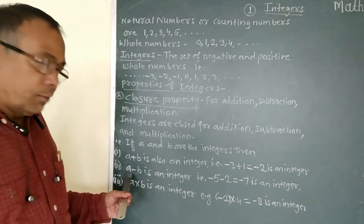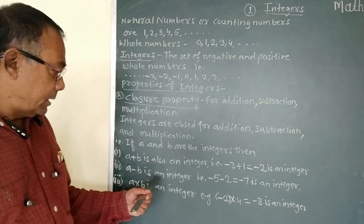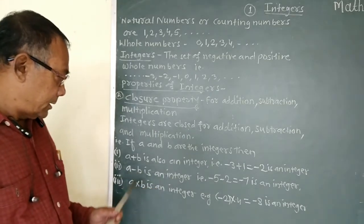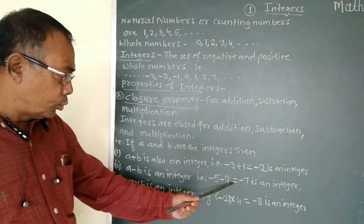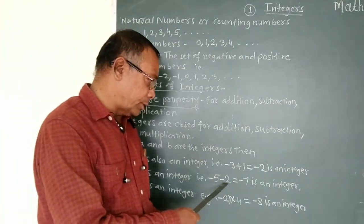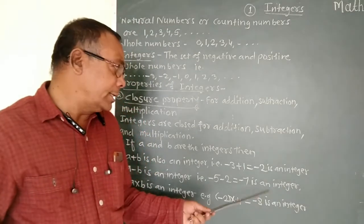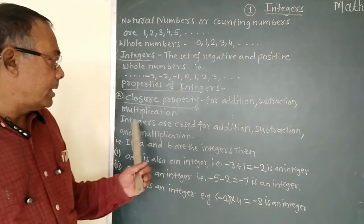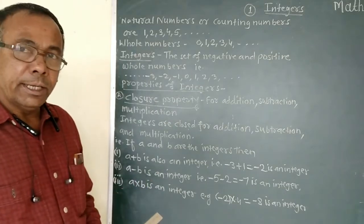Now we will consider whether a minus b is an integer or not. If a is equal to minus 5 and b is 2, then a minus b, that is minus 5 minus 2, equals minus 7. And minus 7 is also an integer. Therefore, the closure property is satisfied for the subtraction of integers.